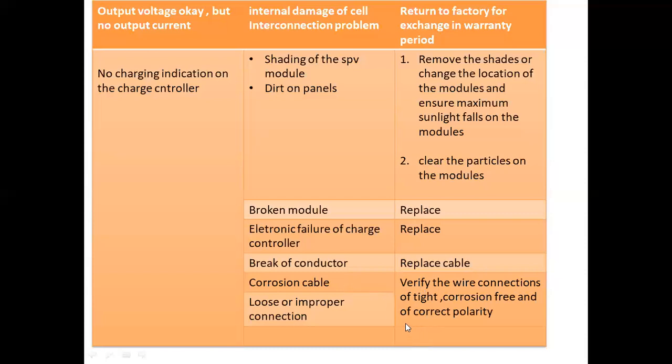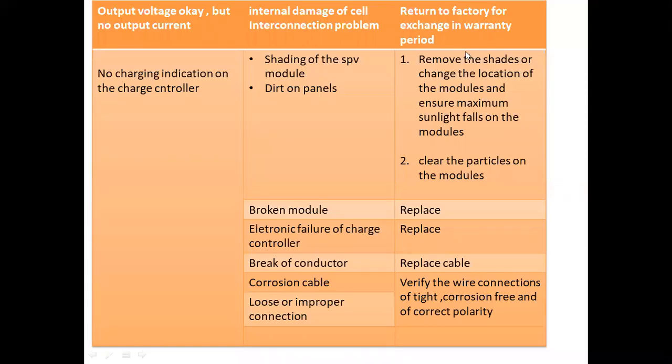To summarize: the points are corrosion cable, break-off conductor, and loose or improper connections. These are the faults, and we need to check power generation and fix the electronic charge controller, remove dust, and replace damaged parts. These are the faults in the charge controller and the troubleshooting actions.